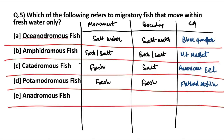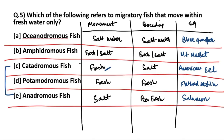Anadromous fish live in salt water but breed in fresh water. An example is the salmon. Catadromous and anadromous are complementary: catadromous moves in fresh water and breeds in salt water, while anadromous moves in salt water and breeds in fresh water. Pause the video and take a screenshot to remember each category of migratory fish — they are very important from the exam point of view.